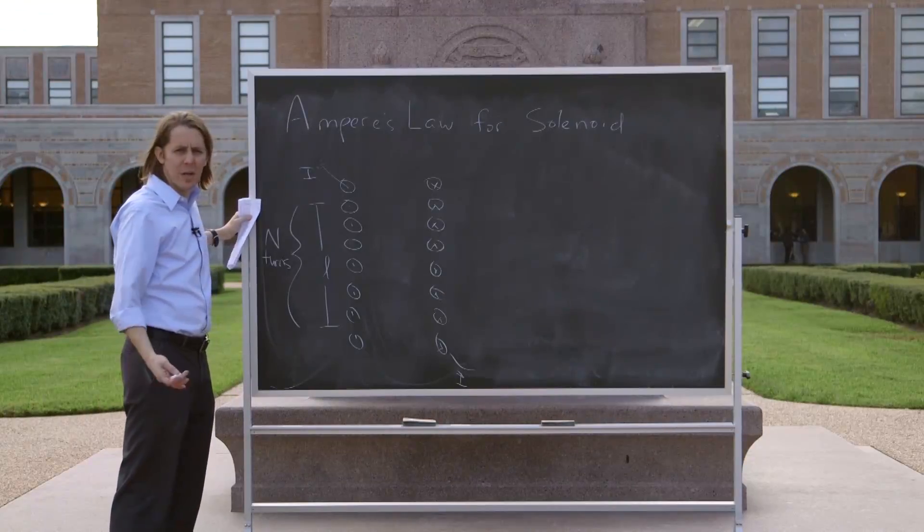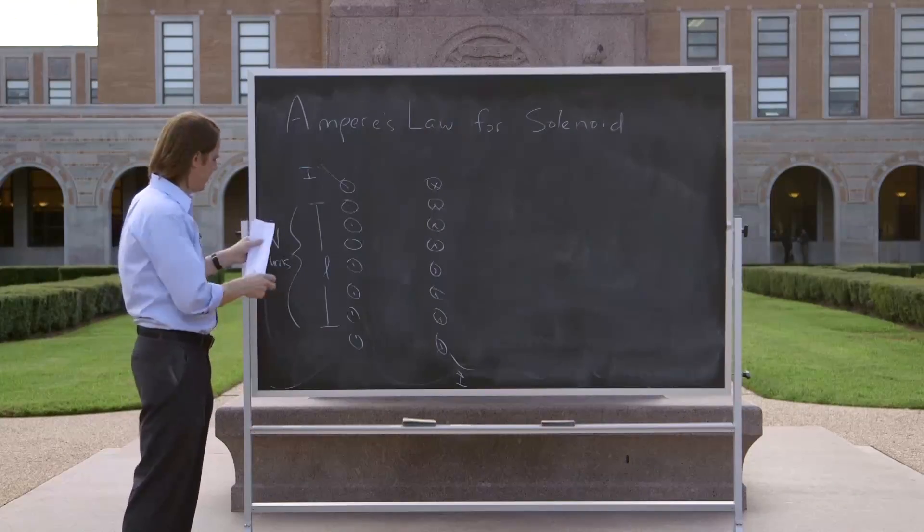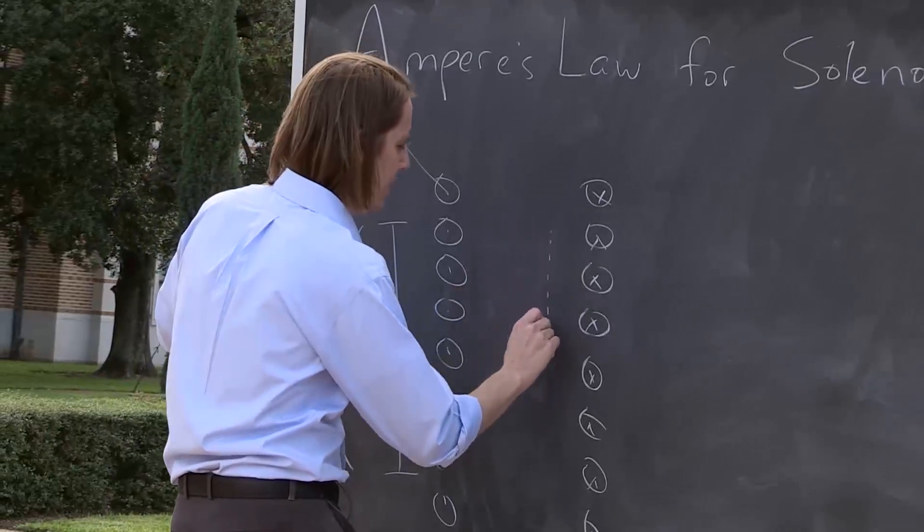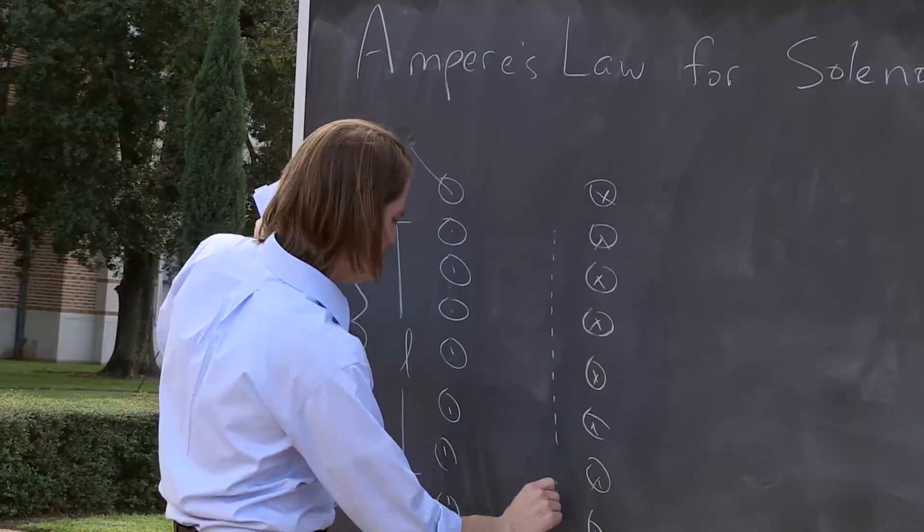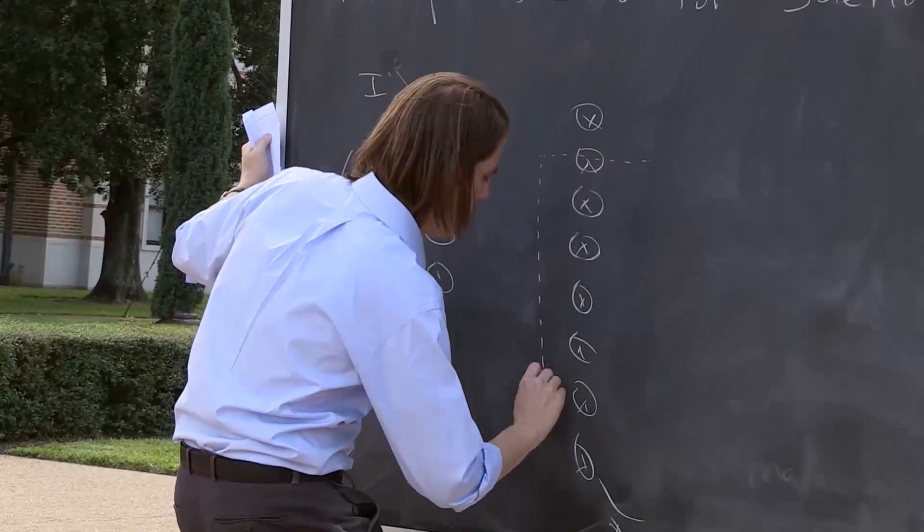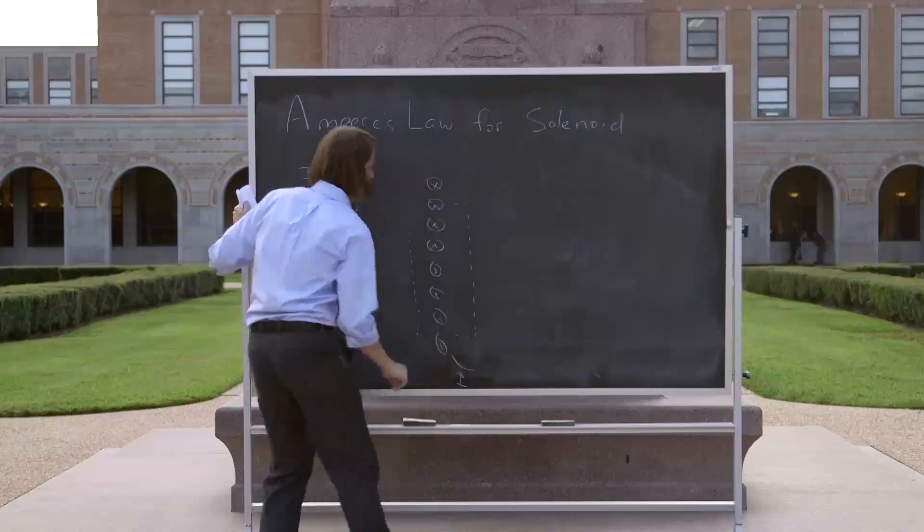So in Ampere's Law, what we've got to do is draw an Amperian loop. So we're going to draw one that's inside the solenoid, and covers the length L, and then goes outside the solenoid. Like that.